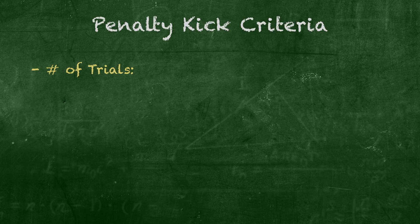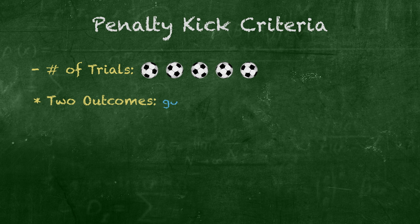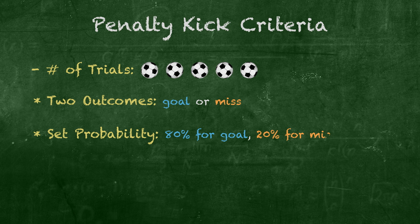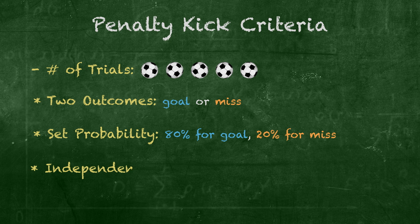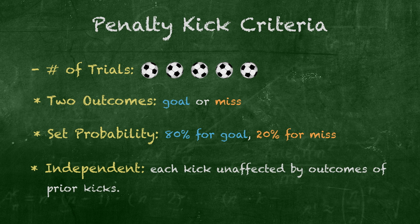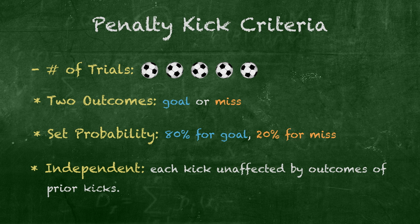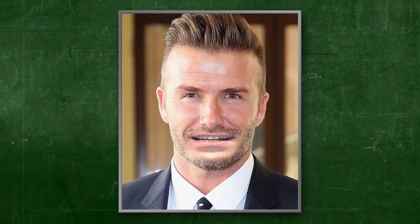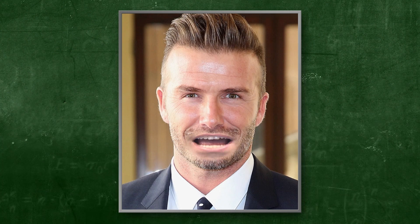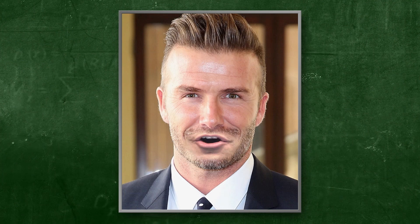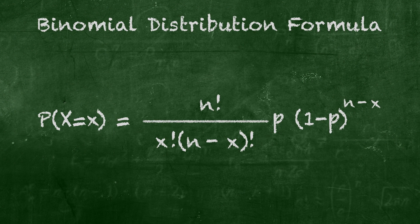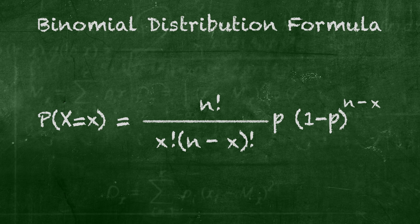So it appears that our penalty kick scenario has a fixed number of trials at five kicks. We have two possible outcomes — goal and miss — each with a set probability: 80% chance for a make and 20% chance for a miss. And lastly, we're assuming the trials are independent, that each kick has no bearing on any of the other kicks. These are the three criteria that must be present in any Binomial distribution. Now that we've successfully identified our distribution as Binomial, let's explore the chances of making a certain number of kicks on goal and bringing home the World Cup.